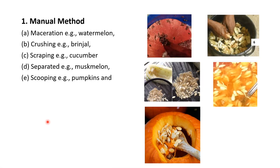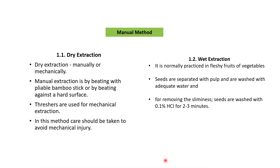Under the manual method, several processes are used: maceration, practiced in watermelon by crushing the fruit in a bucket of water; crushing by hand in brinjal; scraping of cucumber seeds and drying in the sun; separation by treating in a bowl of water and letting it settle so seeds separate from pulp; and scooping, practiced in pumpkins using a spoon to scoop out seeds from the pulpy material.